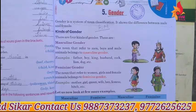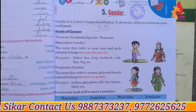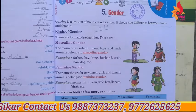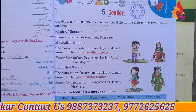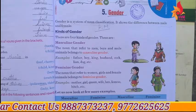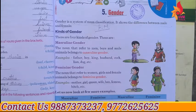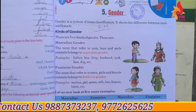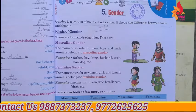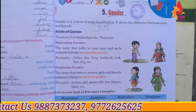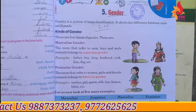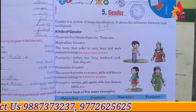So what is the difference in this classification? There are four types: masculine, feminine, common, and neuter.